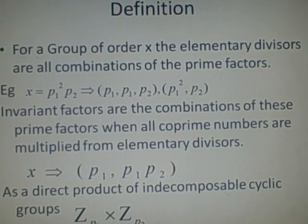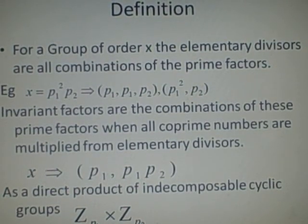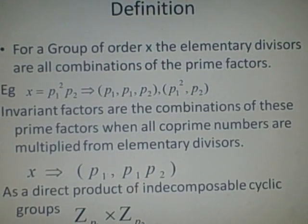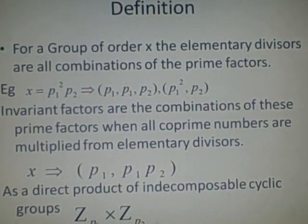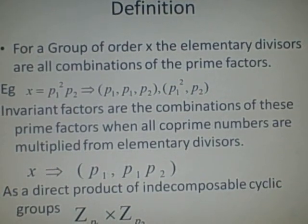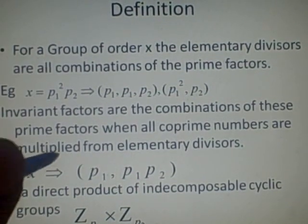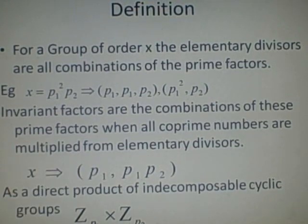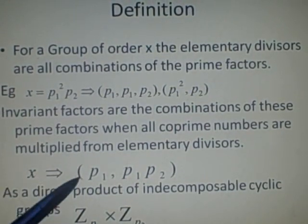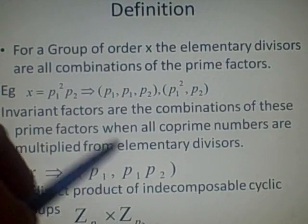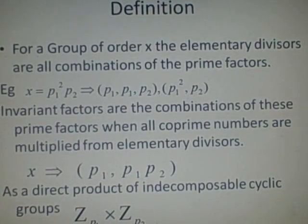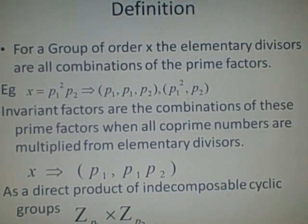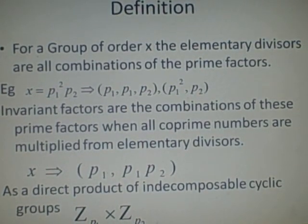The invariant factors are the combinations of these. So we have to combine any items in these which are co-prime. So if p1 and p2 are co-prime, then we'll have this as an invariant factor. So p1 and then p1 times p2. If p1 squared and p2 are co-prime, then p1 squared times p2 will also be an invariant factor.